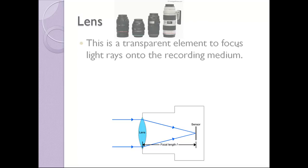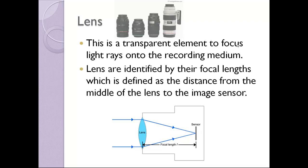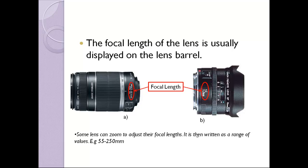Lens. This is a transparent element to focus light rays onto the recording medium. Lenses are identified by their focal lengths, which is defined as the distance from the middle of the lens to the image sensor. The focal length of the lens is usually displayed on a lens barrel. Some lenses can zoom to adjust their focal lengths, and it is then written as a range of values, for example, 55 to 250 millimeters. The focal length of this lens is 55 to 250, and the focal length of this lens is a fixed length of 15 millimeters.